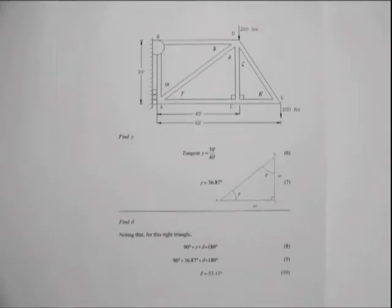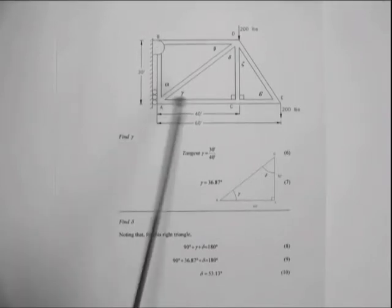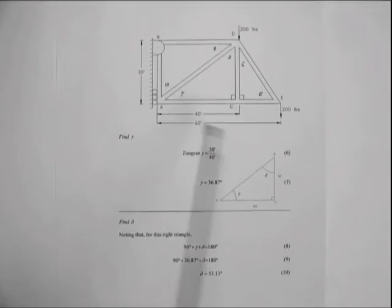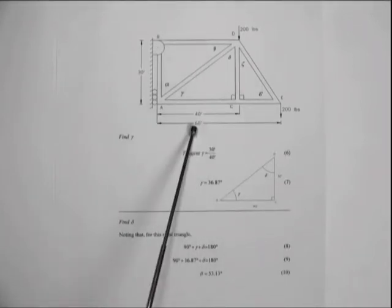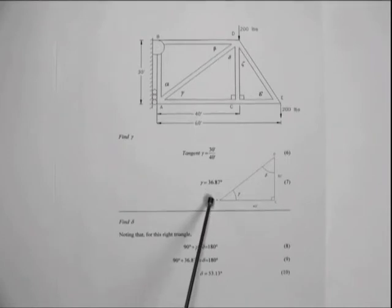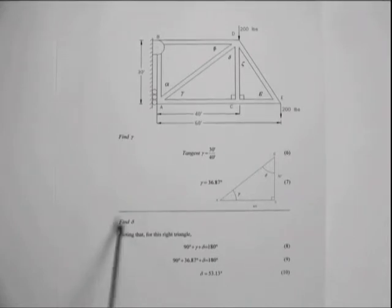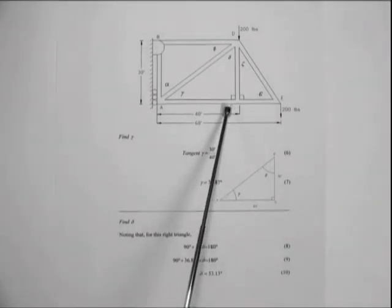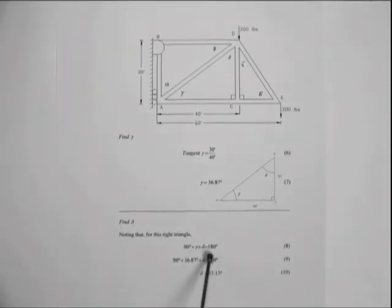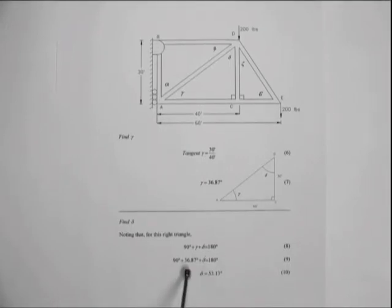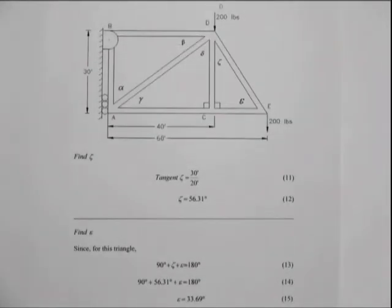Next, we will analyze this triangle of members. Since the tangent of the angle gamma equals 30 feet divided by 40 feet, gamma is equal to 36.87 degrees. To find the angle delta, we note that this angle is a right angle and that the sum of the angles must equal 180 degrees. Substituting in our known value for angle gamma, we find that angle delta is equal to 53.13 degrees.